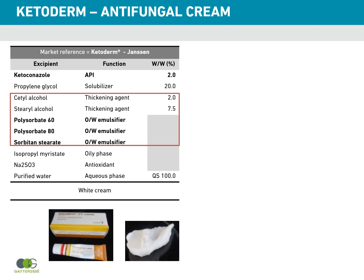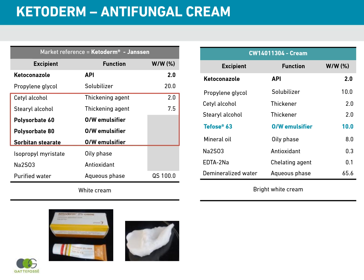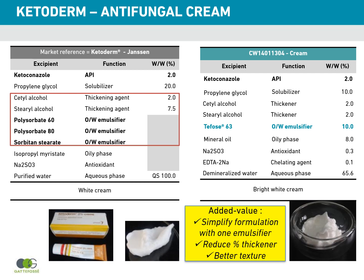This is an example of how you can simplify a formulation with TEFO63. On the left-hand side, you have a market reference ketoconazole cream called Ketoderm, containing different emulsifiers — polysorbate 60, polysorbate 80 and sorbitan stearate — with two thickeners, cetyl alcohol and cetyl alcohol. GAT4C's lab reformulated this cream with TEFO63 at 10%, reducing the thickener from 7.5% to 2%, obtaining exactly the same viscosity and improved cream texture.